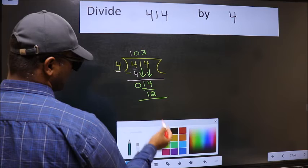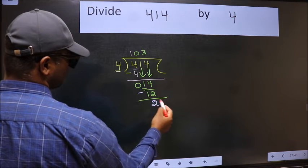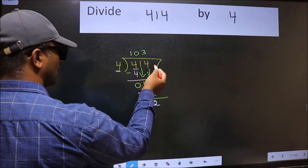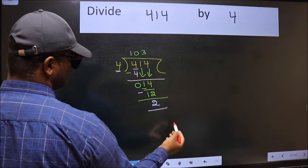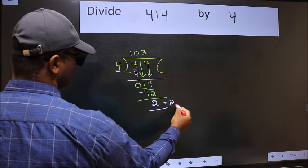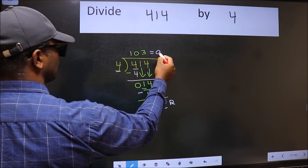Now we should subtract. We get 2. No more numbers to bring down, so we stop here. This is our remainder and this is our quotient.